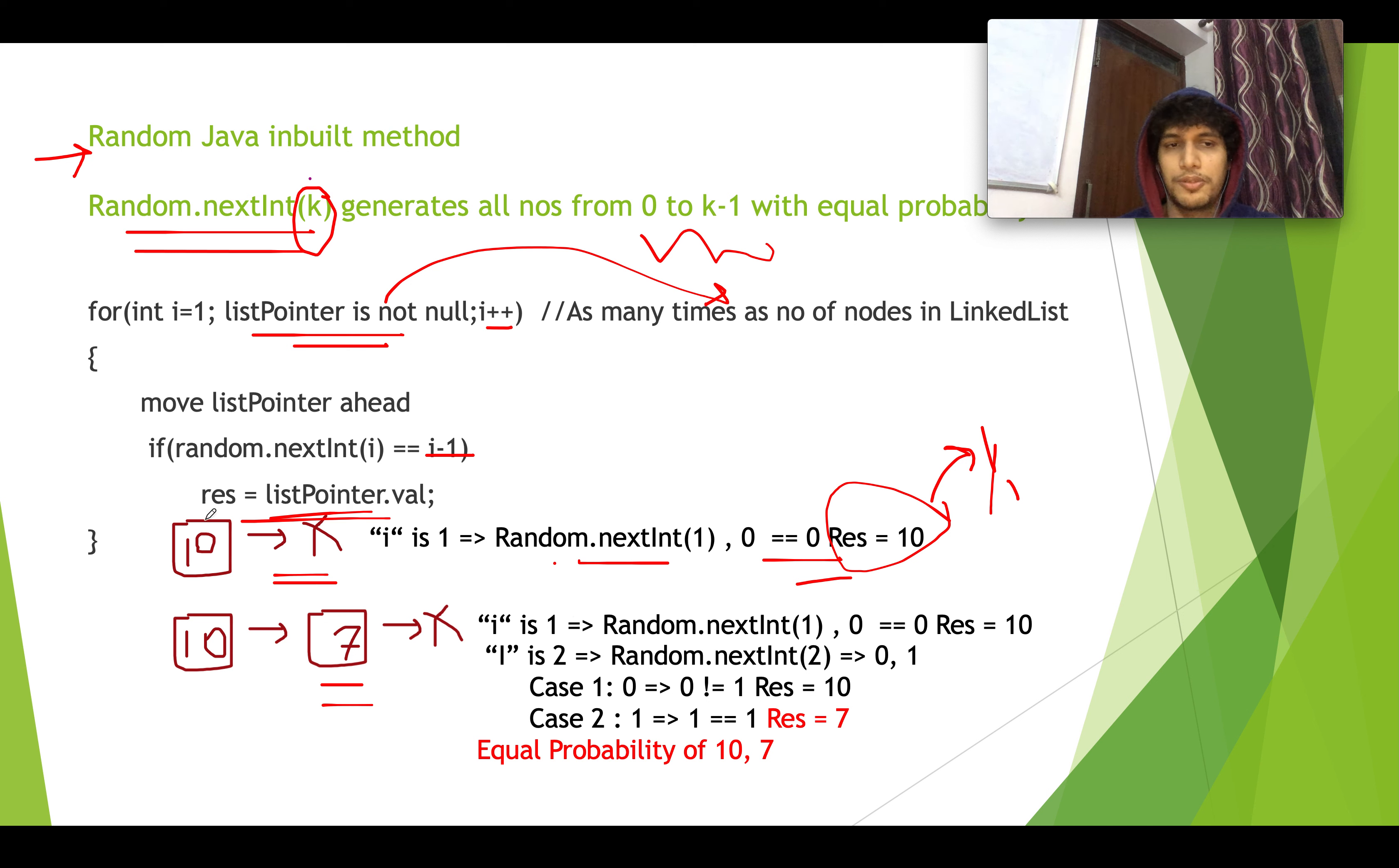Let's assume we have 10 again, and after 10 we have 7 there, the second node is 7. So during the first iteration, i is 1, random.nextInt will generate 0, 0 is equal to 0, result is set to 10. Now let's do the second iteration, i is equal to 2, random.nextInt will generate 2 possibilities here: 0 or 1. So let's consider case 1 where 0 is generated, so 0 is not equal to 1. That means result will be set to the previous value that has been set, that is 10. So this statement won't be executed and the value won't be updated.